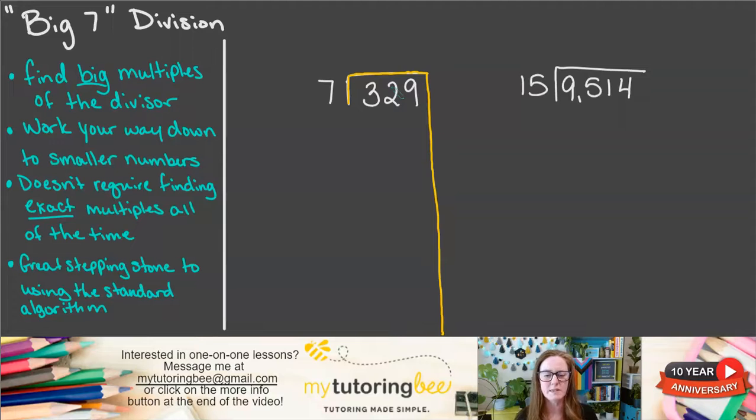What we're going to do here is think about how to take away groups of 7 from 329. Now we could just subtract 7 and keep doing that over and over again. However, that could take a while. So we're going to find larger groups of 7 that we can subtract away from 329 and count them up that way.